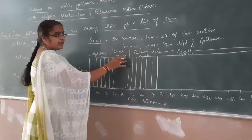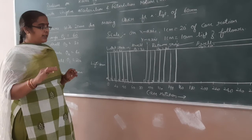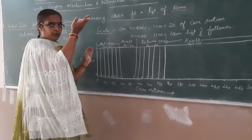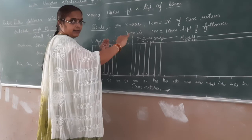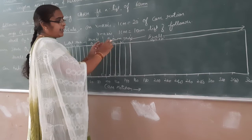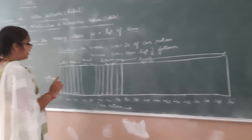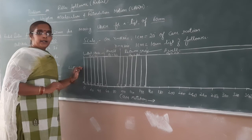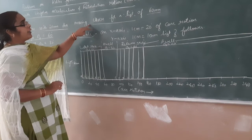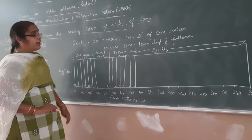The dwell region is the region where the follower is at rest. When the cam rotates 60 degrees the follower performs the outstroke. When the cam rotates another 30 degrees the follower is at rest. When the cam rotates another 60 degrees the follower performs the return stroke. During the remaining 210 degrees of cam rotation the follower is under rest. For uniform velocity the construction method is different; similarly for simple harmonic motion the method is different. Today we are learning uniform acceleration and retardation motion.